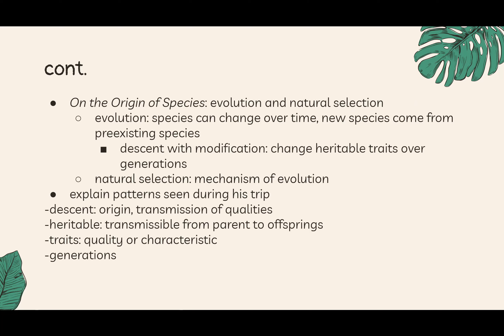Descent means the origin or transmission of qualities from parent to child. Heritable means something transmissible from parent to offspring — for example, if both your parents have blue eyes, that heritable trait means you may also have blue eyes. Traits are qualities or characteristics like eye color, skin color, or hair curl. A generation refers to a group such as you and your cousins, while your children would be the next generation.